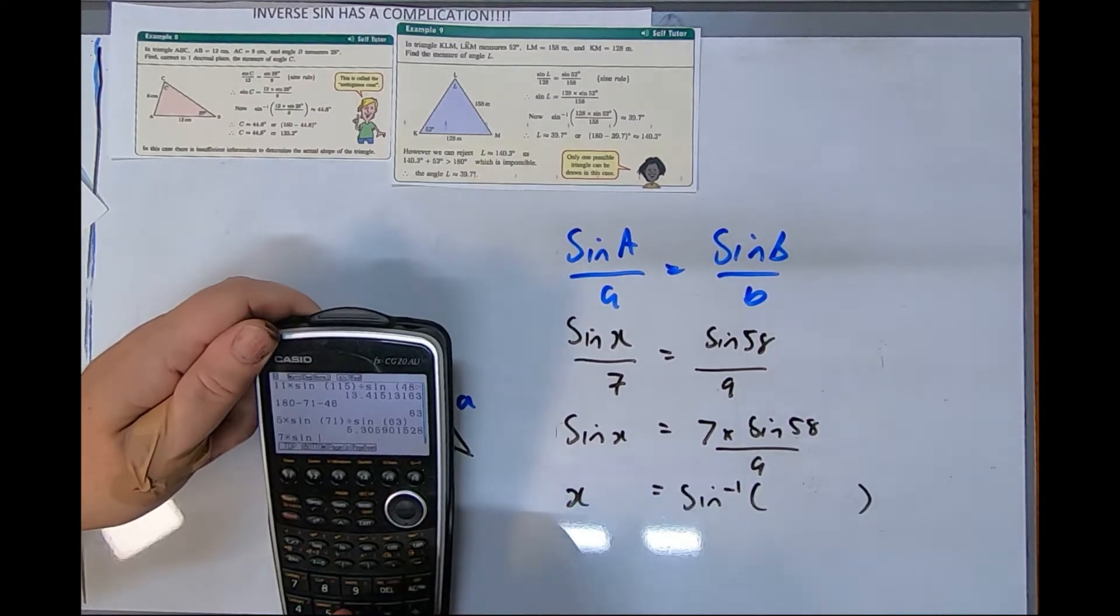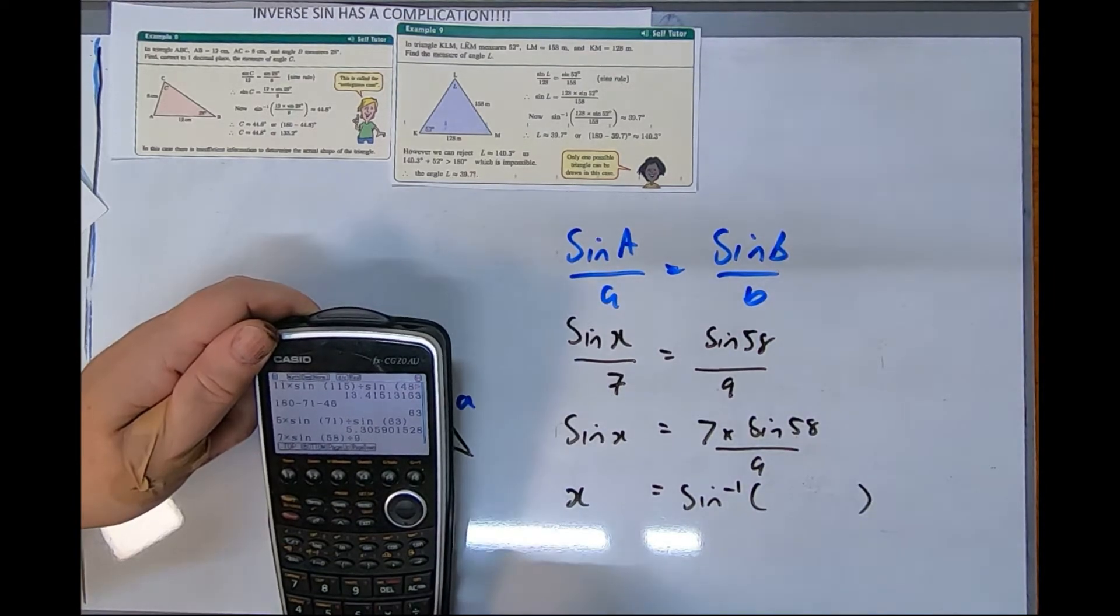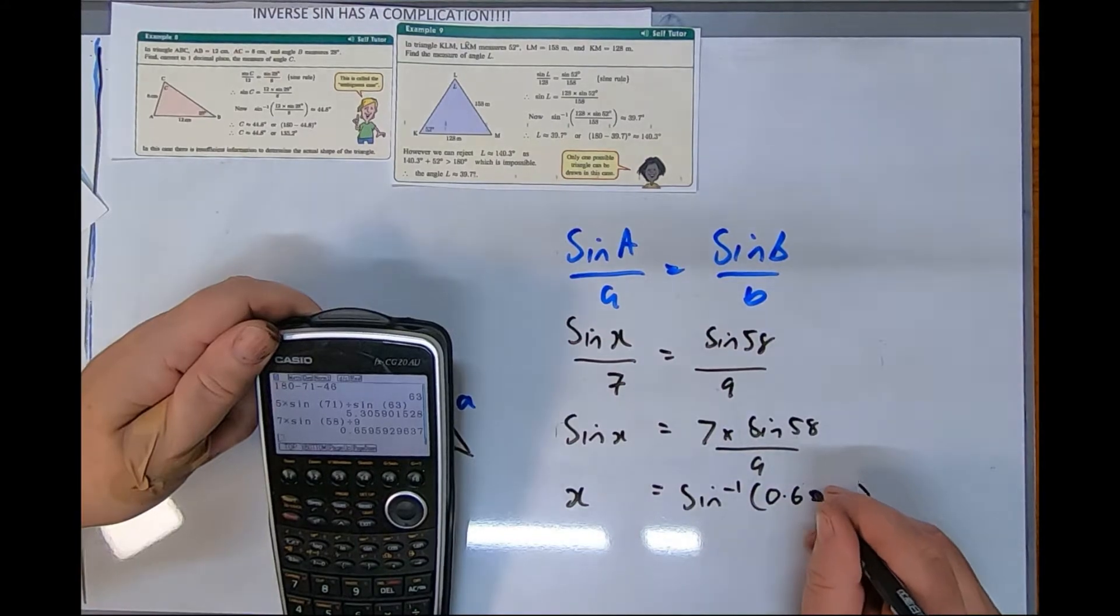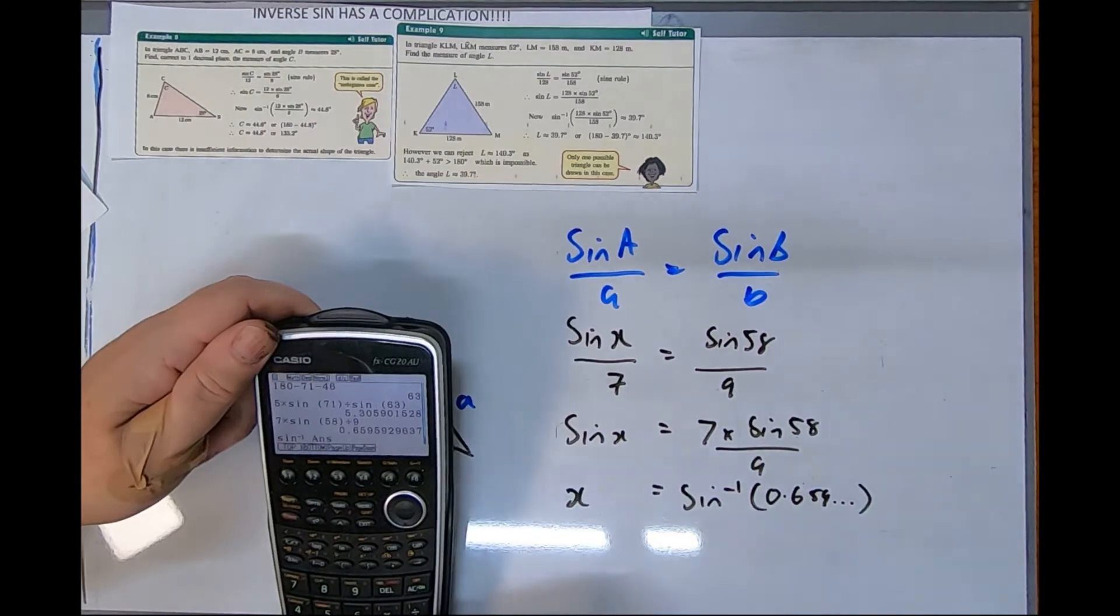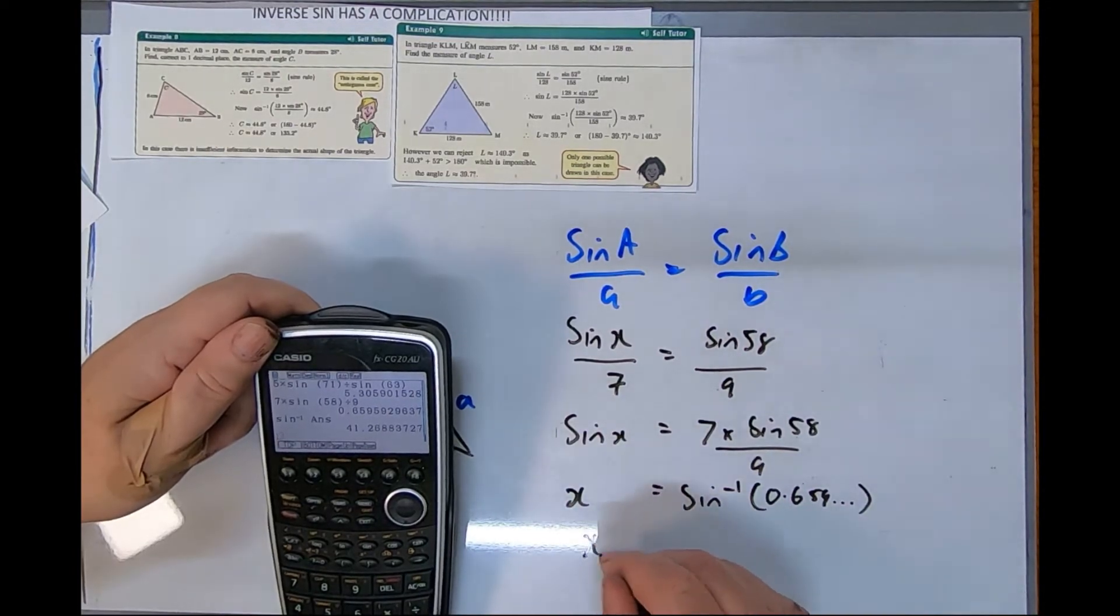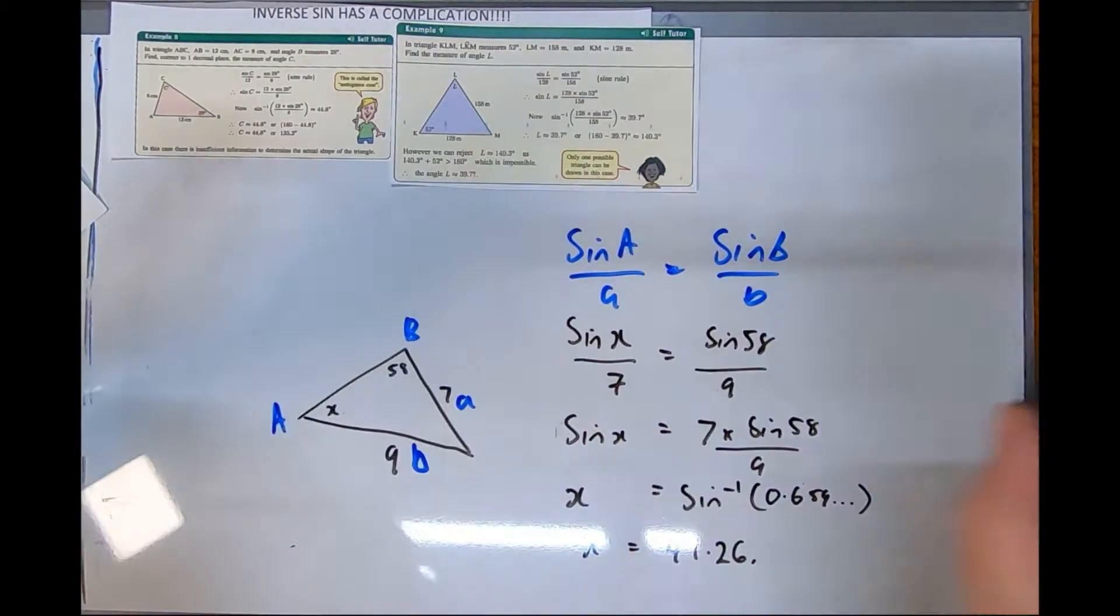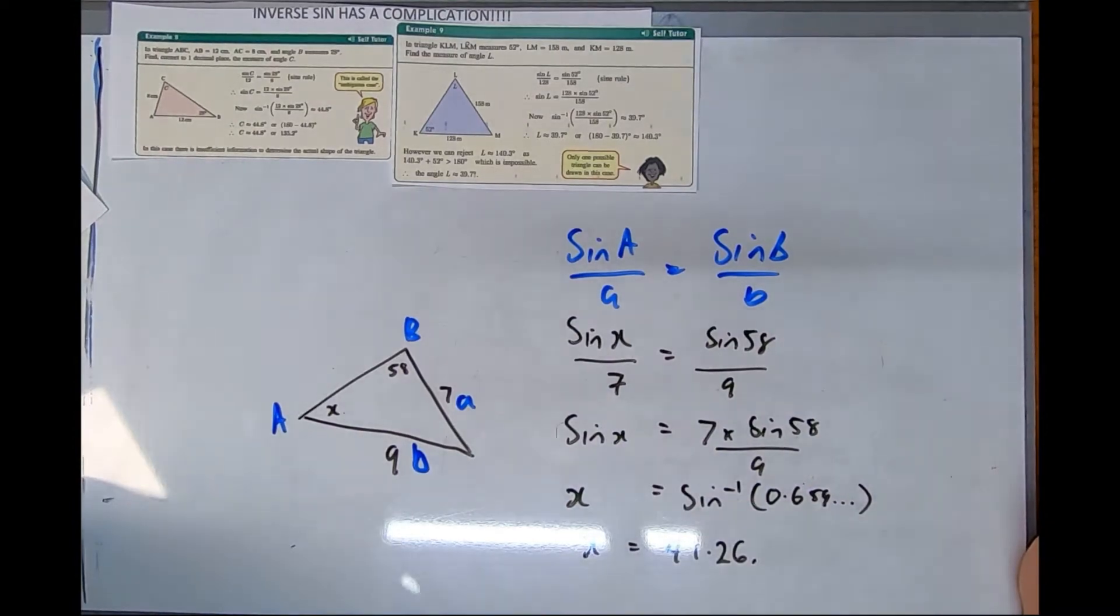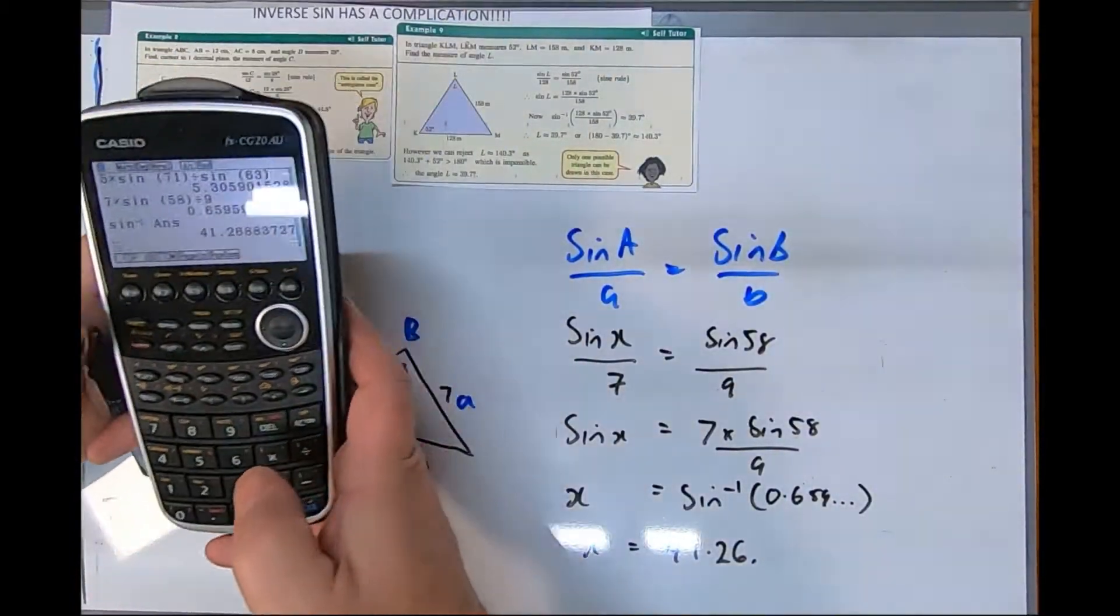I'm going to calculate this bit first: seven times sin 58, put that in bracket 58, all divided by 9. That's 0.659 etc. Now we go shift sin, shift answer, and we get x equals 41.26.